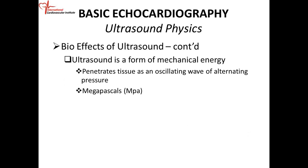When you initiate your ultrasound wave and image a structure in the body, the sound wave travels to that structure. Some of the wave is reflected and some is transmitted through the tissue, giving you penetration as an oscillating wave of alternating pressure — usually measured in megapascals.